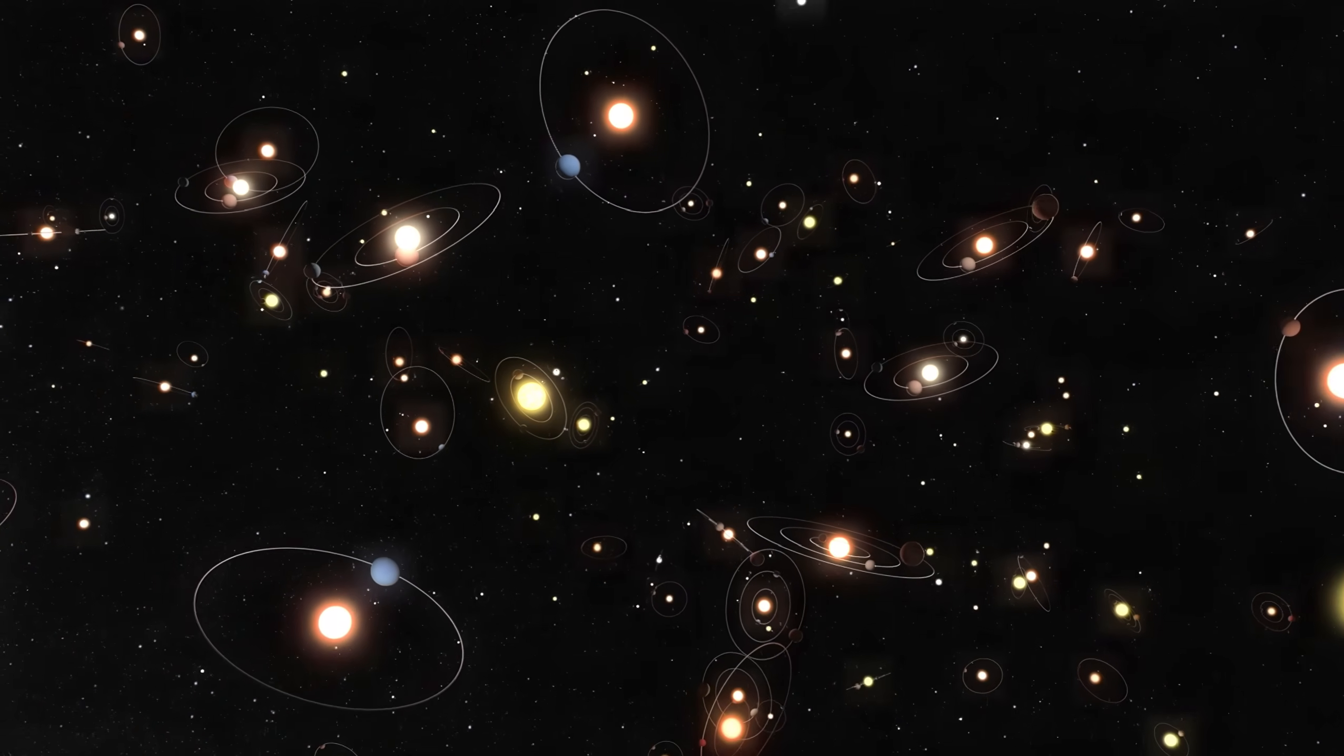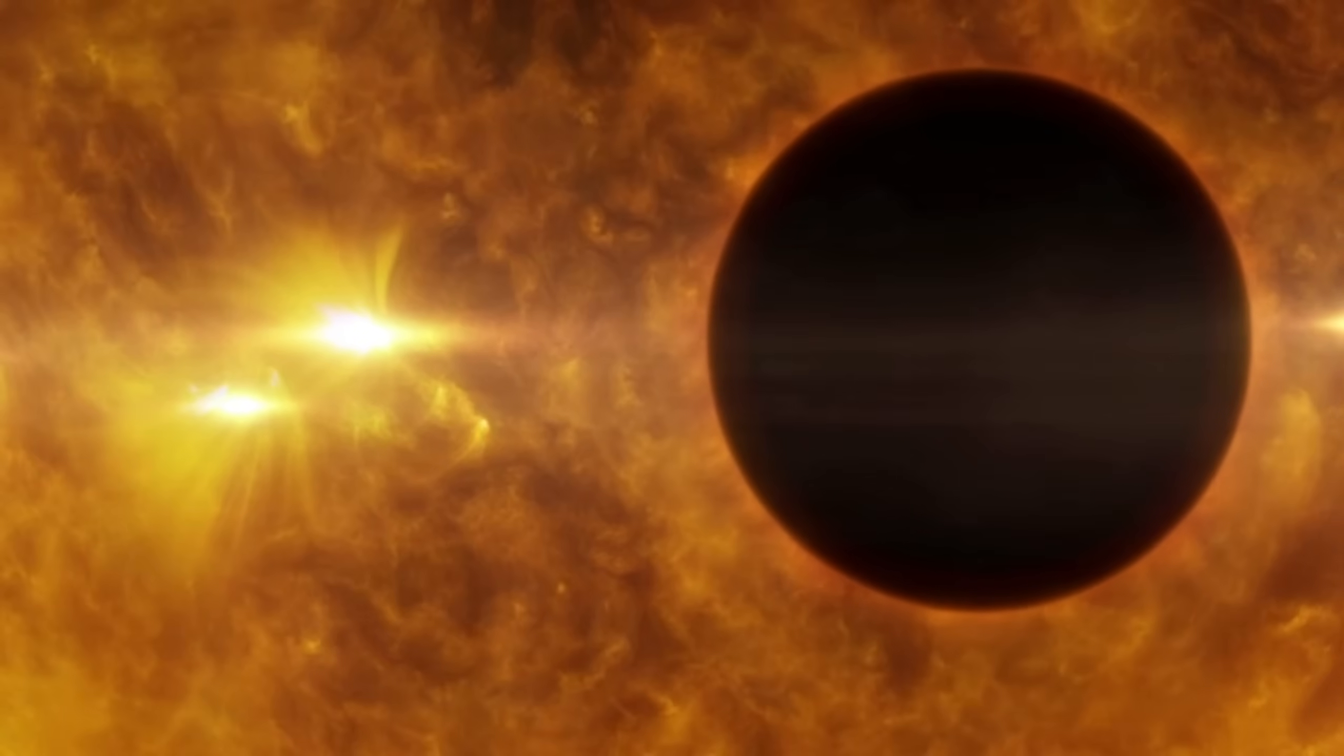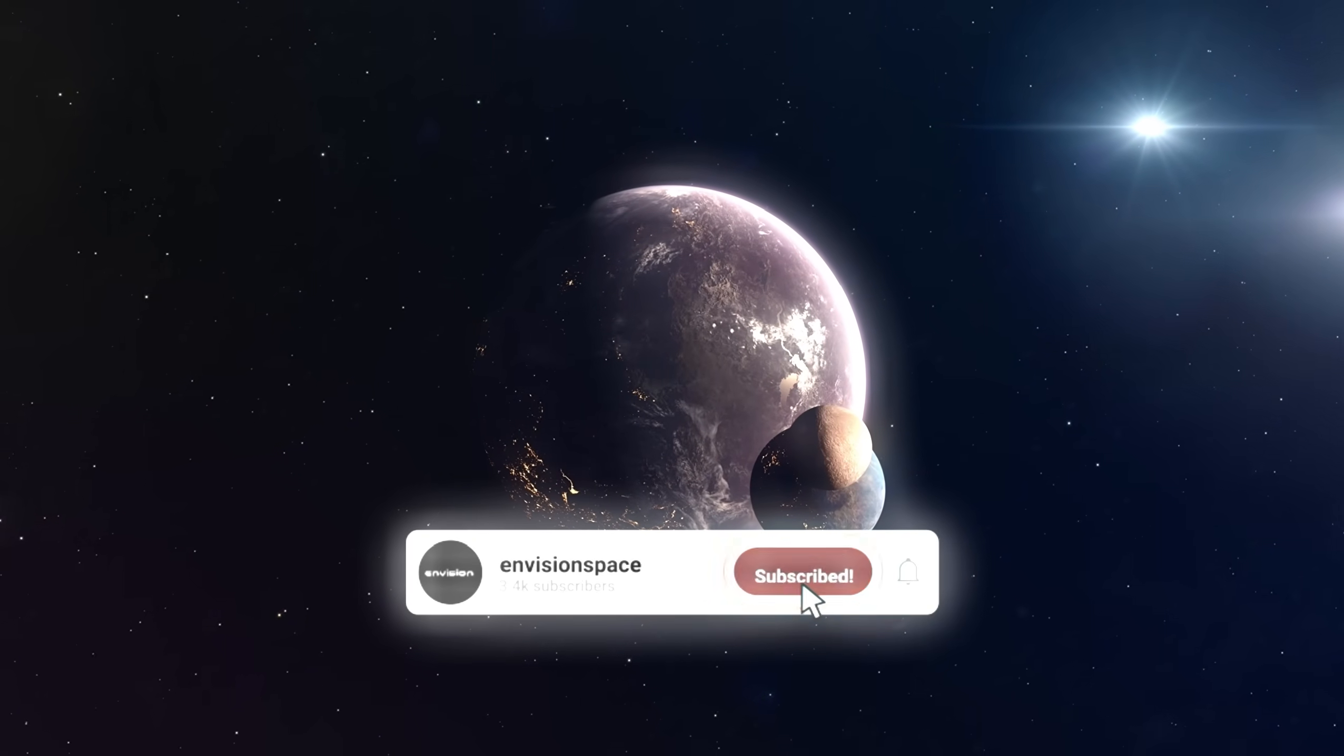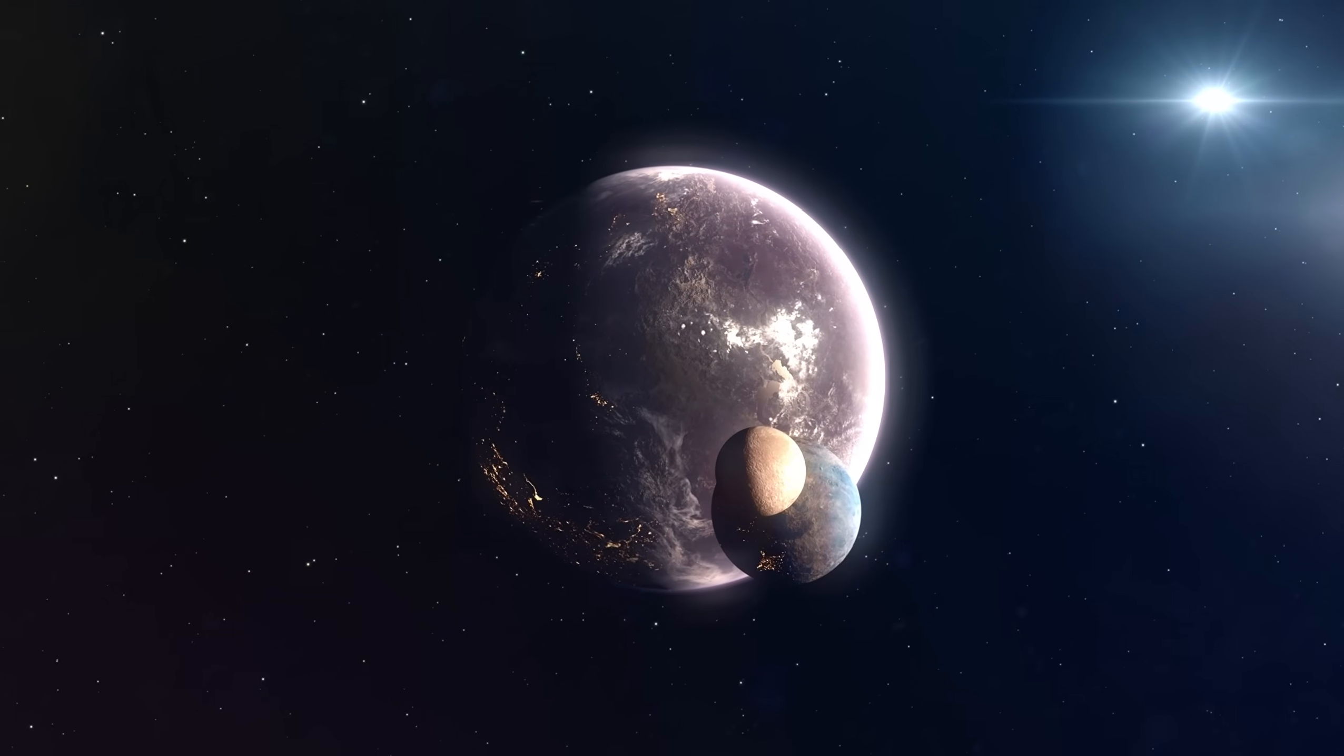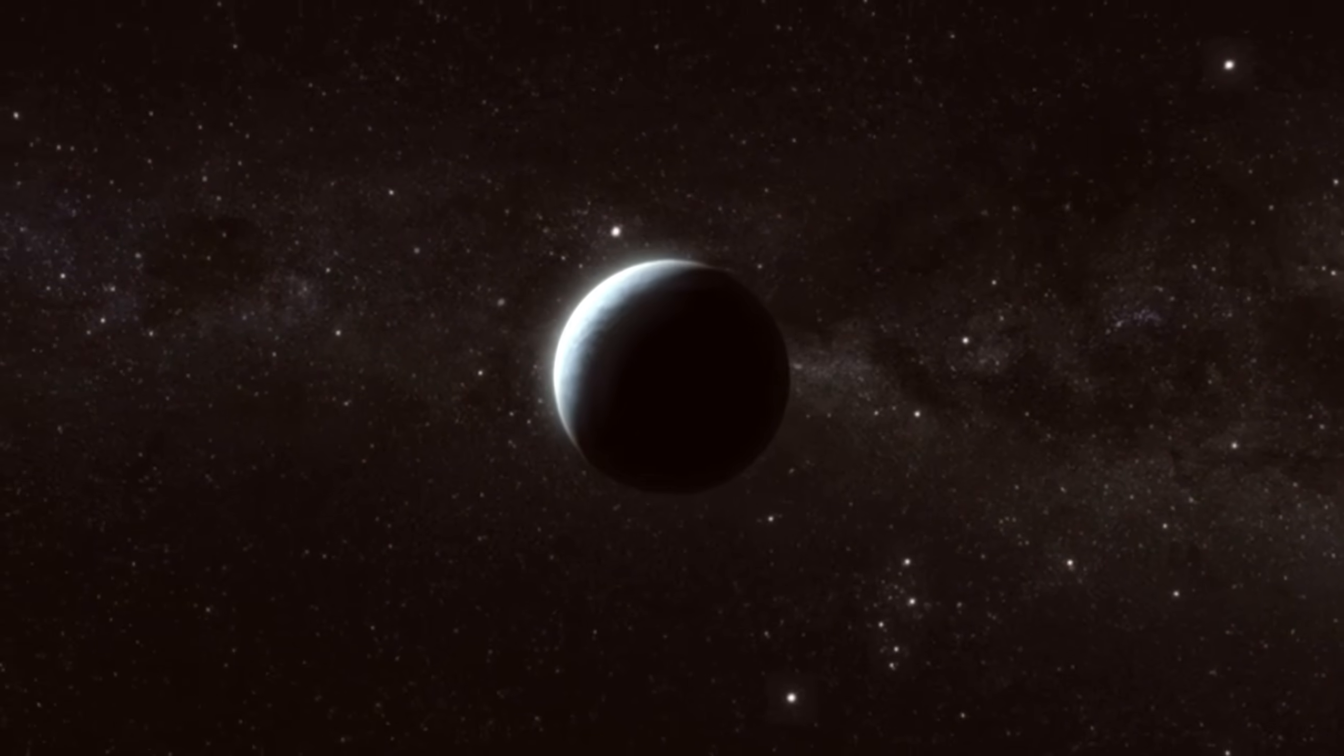Imagine a future where we have found not just one, but many planets like Proxima B. A future where we have confirmed that life exists elsewhere in the universe, and perhaps even made contact with an alien civilization. It is a future that seems like science fiction, but it is one that we are moving towards, one discovery at a time. The James Webb Space Telescope is at the forefront of that journey, and its discoveries are bringing us closer to understanding our place in the cosmos.